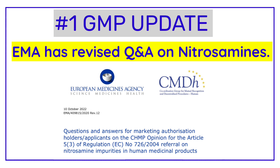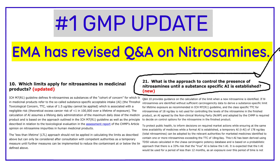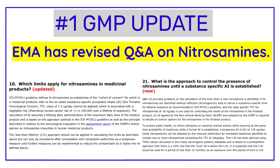The key change in this Q&A document is that before this revision there were 19 questions, and the number has now been increased to 21 — two new questions have been added. Question Number 10 asks: which limits apply for nitrosamines in medicinal products? Question Number 21 asks: what is the approach to control the presence of nitrosamines until a substance-specific acceptable intake is established? That was GMP Update Number One.